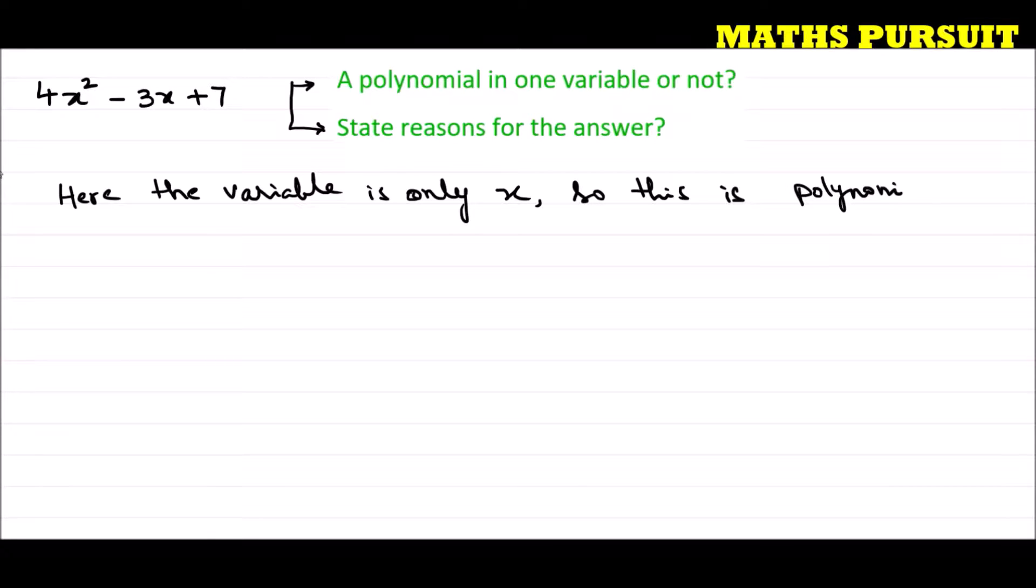If there would have been multiple variables like x, y, z then it would have been polynomial in multiple variables, or two variables or three variables we can say. Here the variable is only x, so this is a polynomial in one variable.